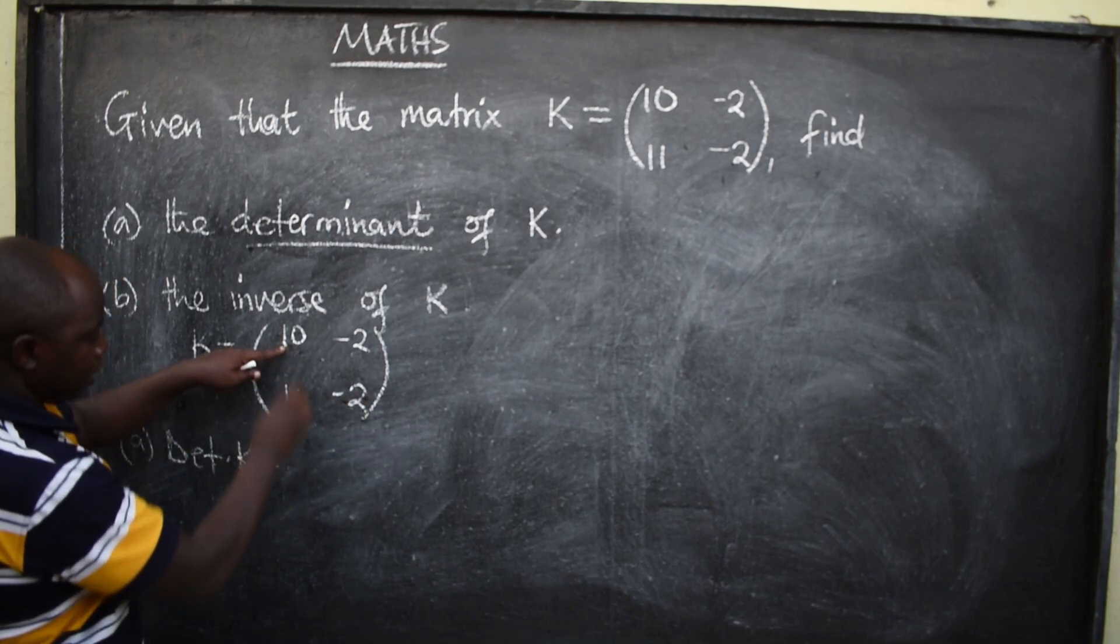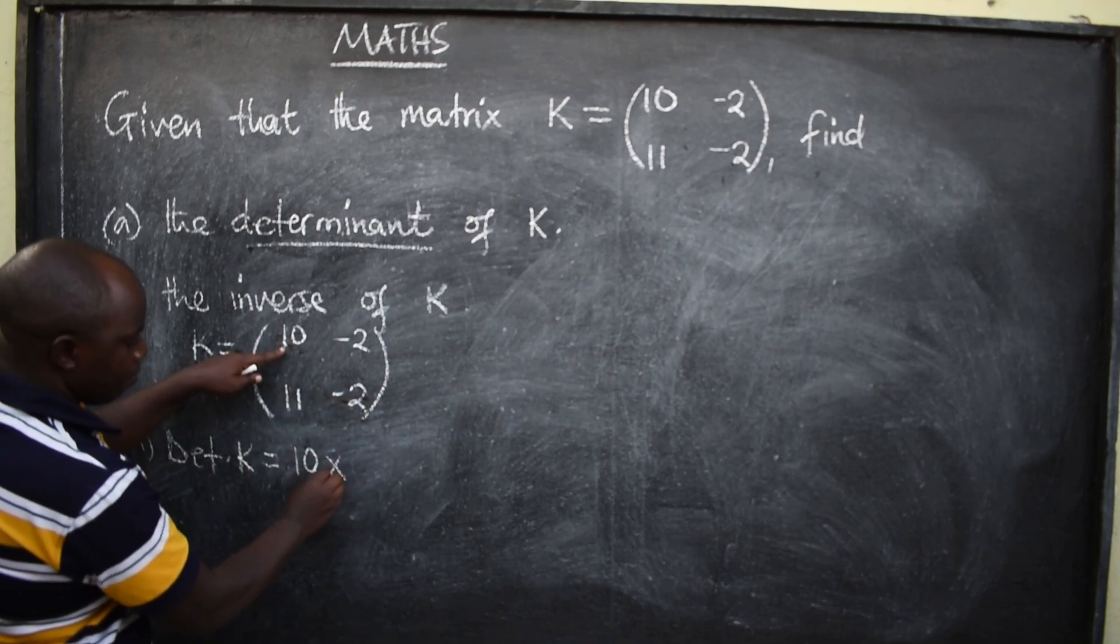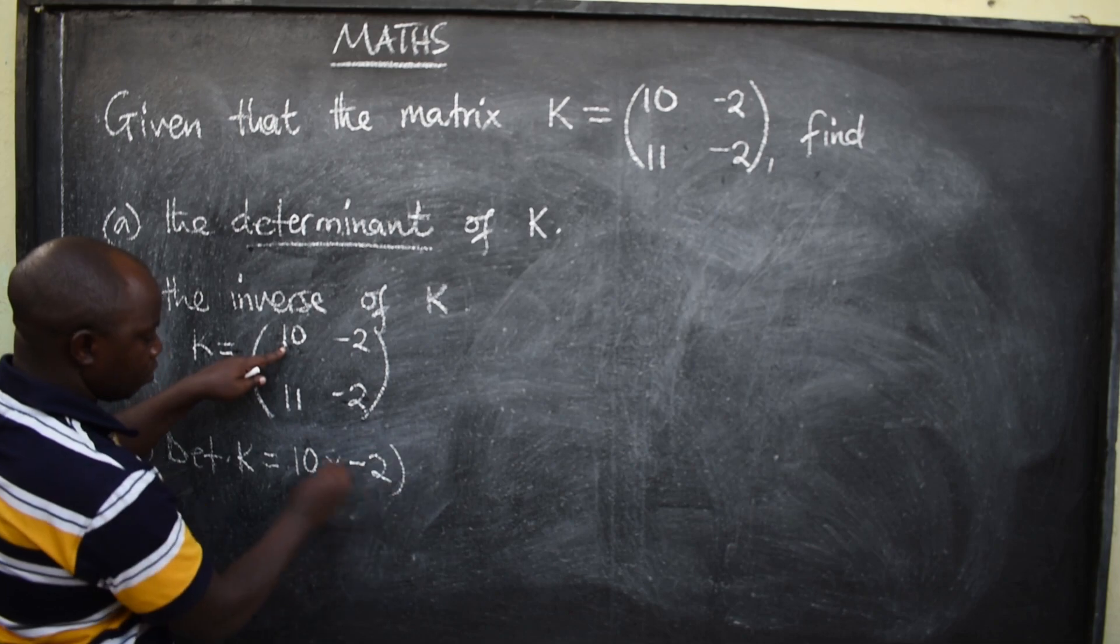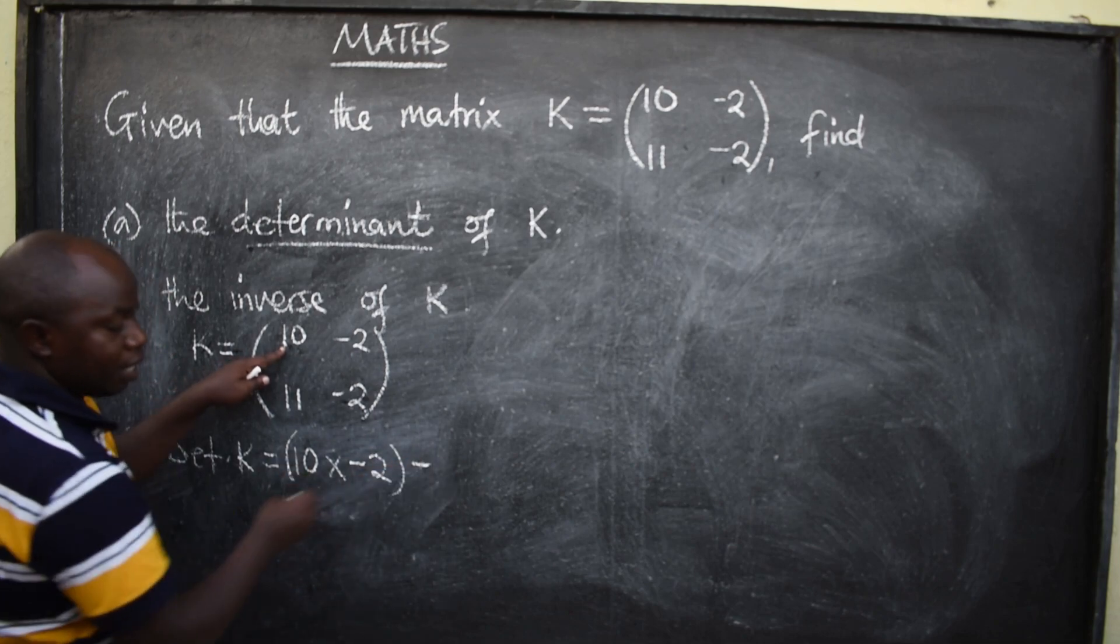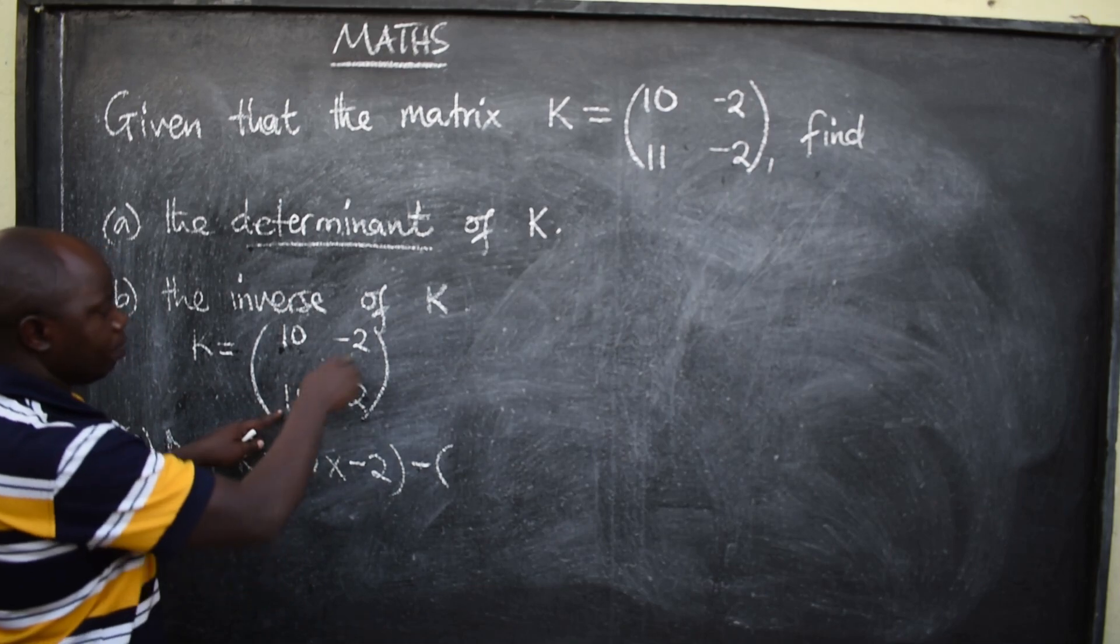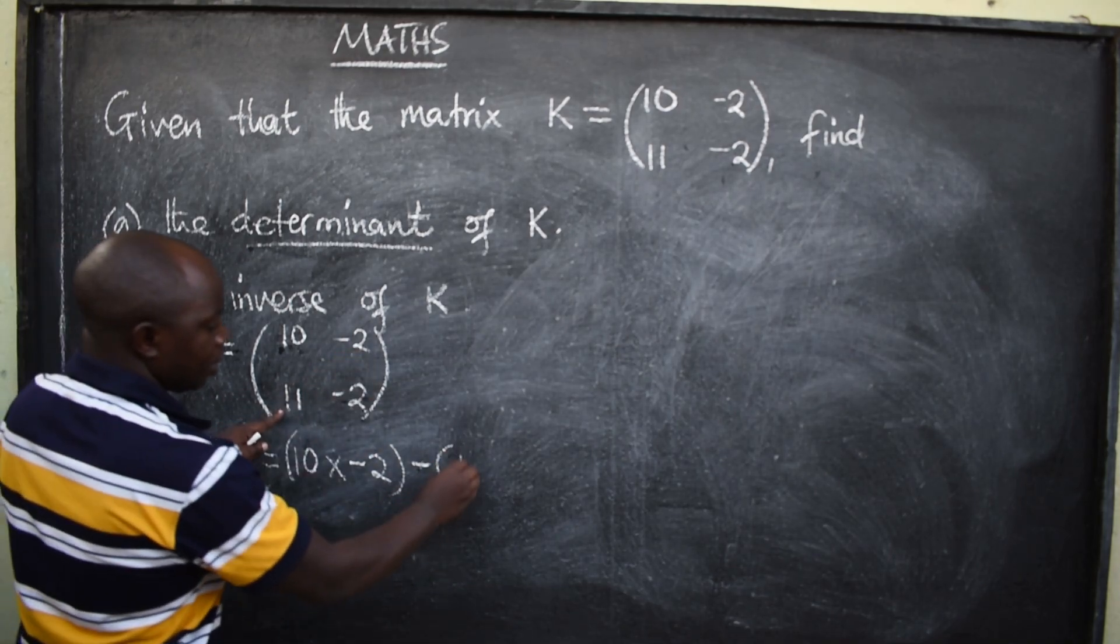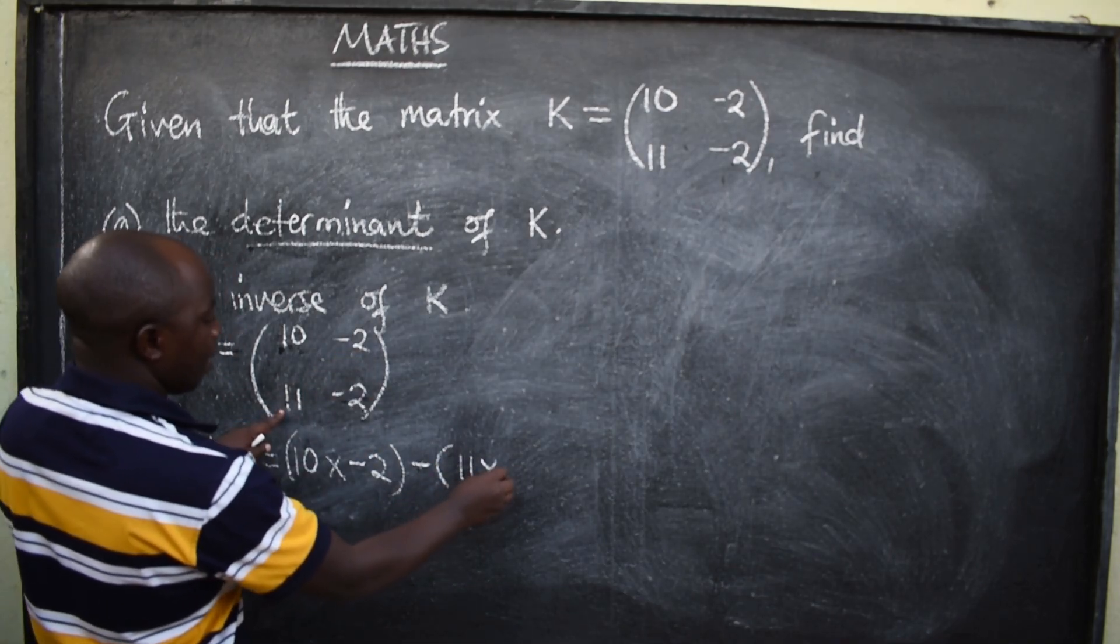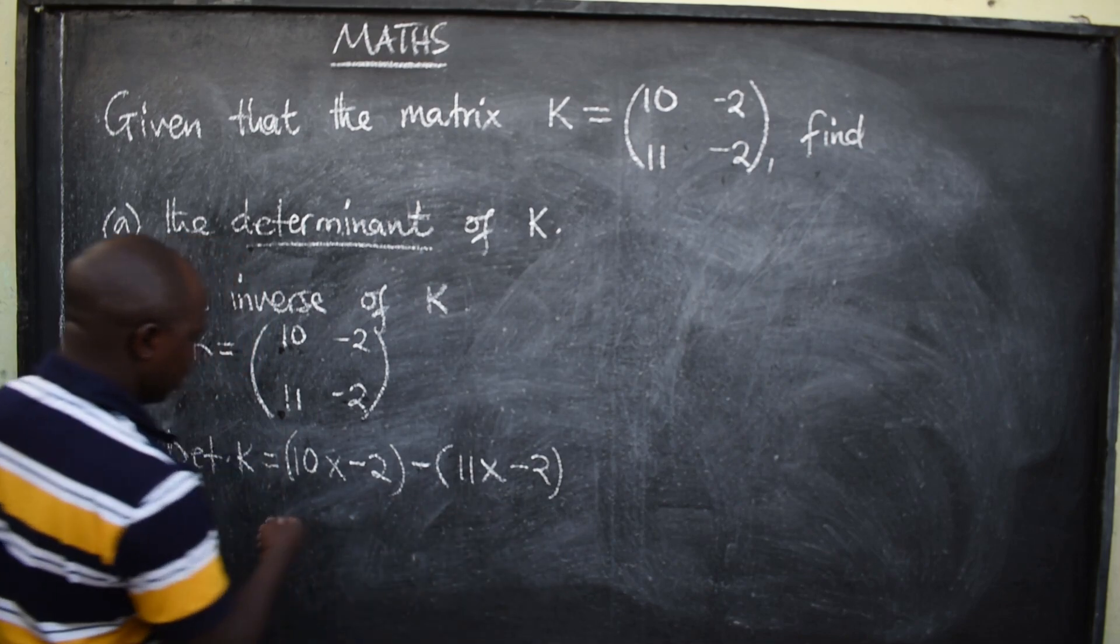you multiply the major, which is 10, multiply by negative 2, put a minus symbol, always minus, then multiply the minor, 11, multiply by negative 2, find the answer.